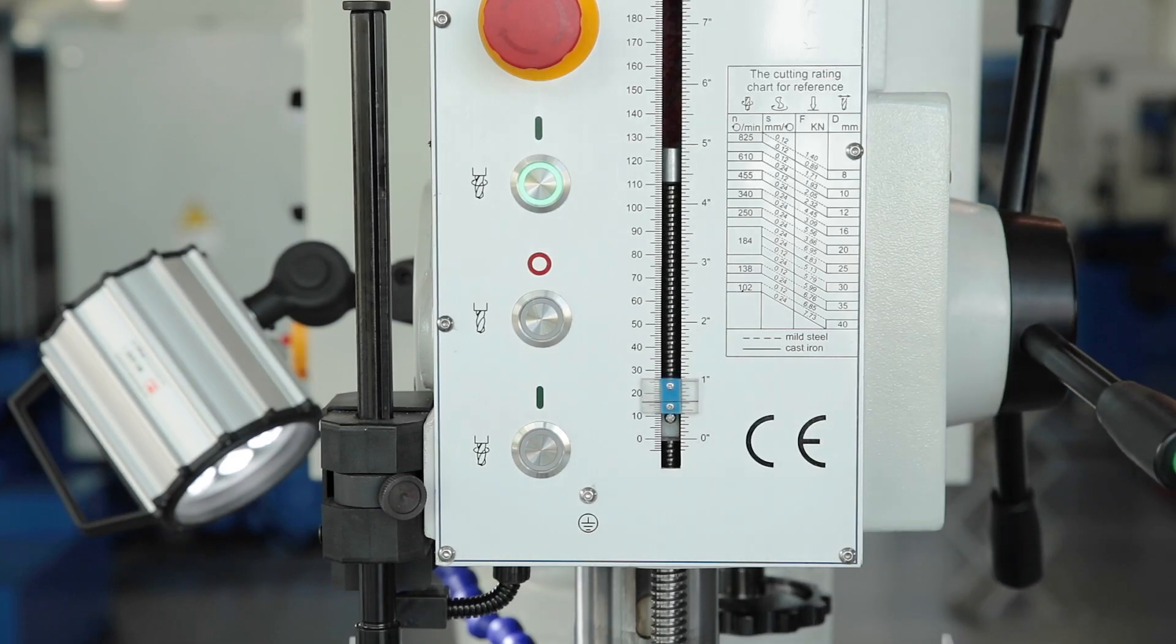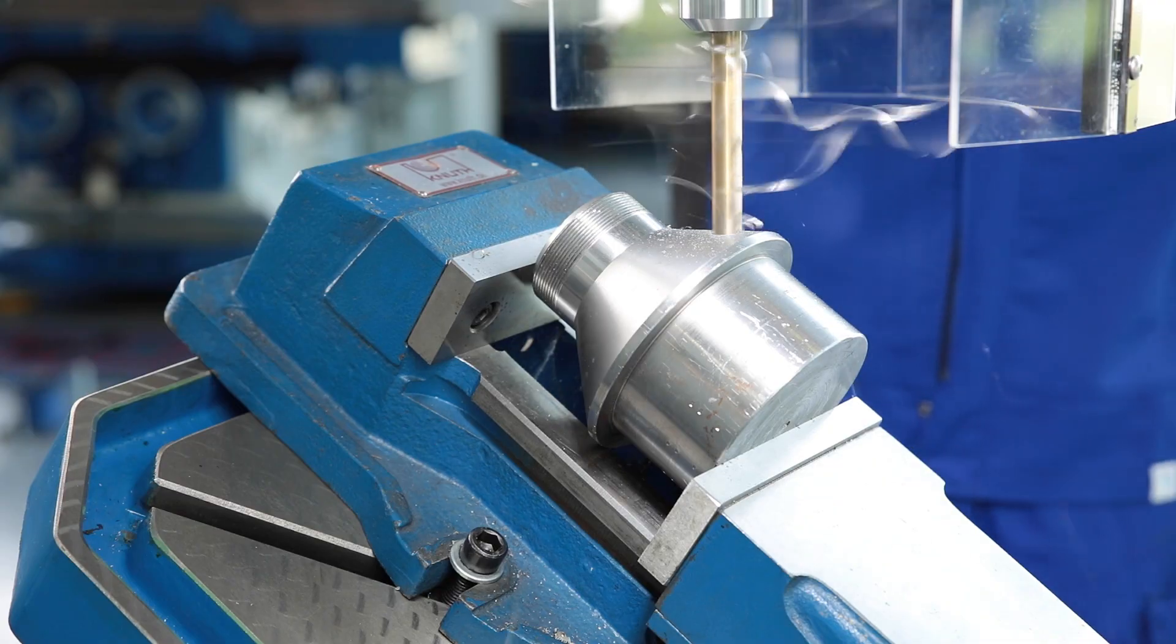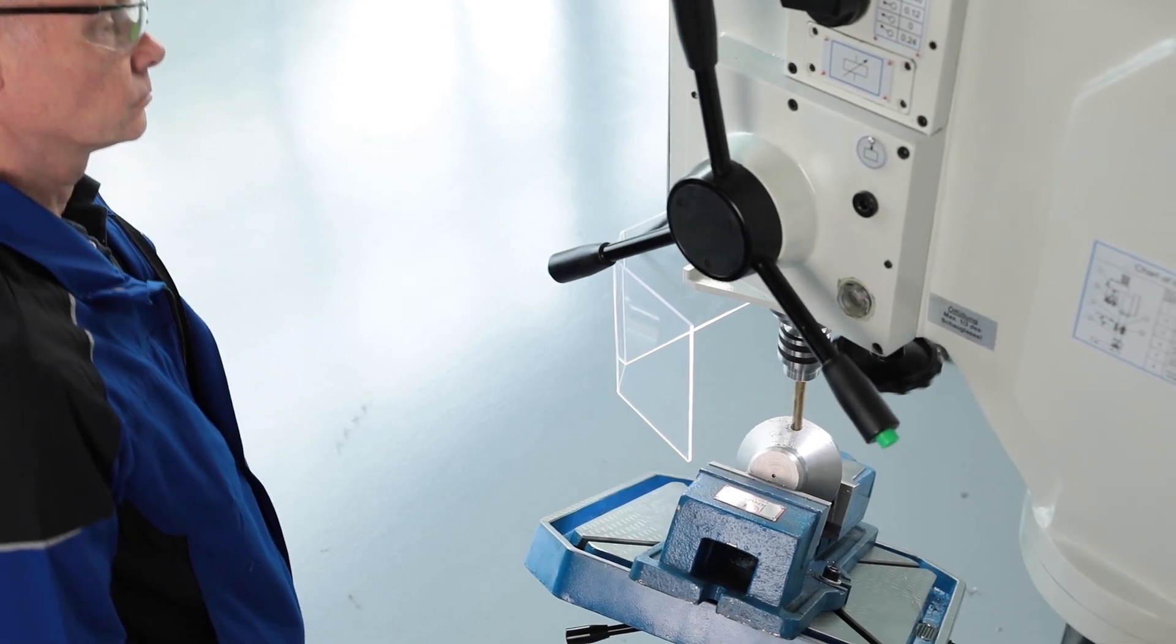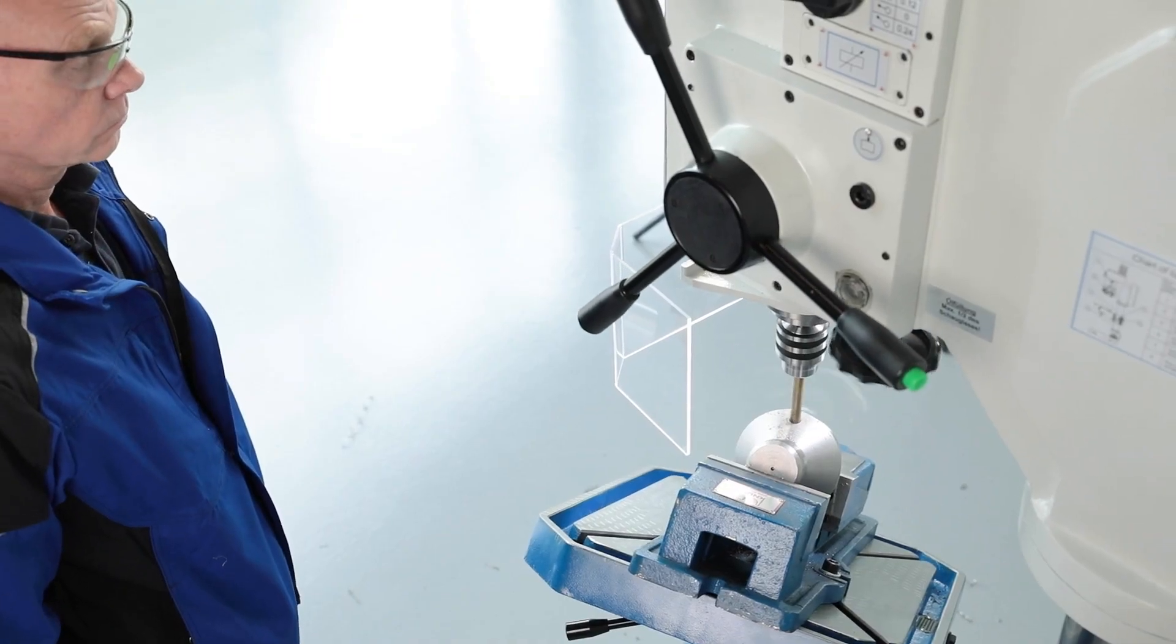The quill stroke may be read off the large scale on the drill head and the drilling depth may be limited in the automatic feed by the integrated depth stop. After reaching the desired drilling depth, the feed switches off and the quill returns to the starting position by spring force.